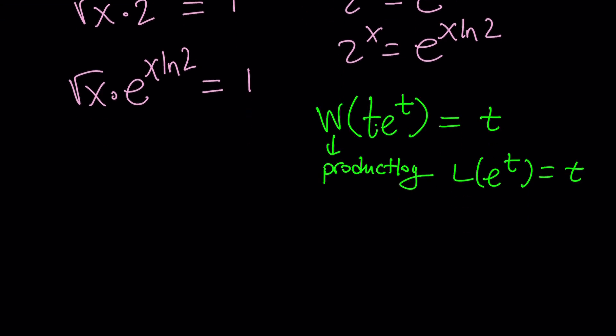Before we start using it, let's go ahead and square both sides. That gives us x times, how do you square exponential? Just double it. You can write it as e to the power of 2x ln two and that's equal to one. Still equal to one.